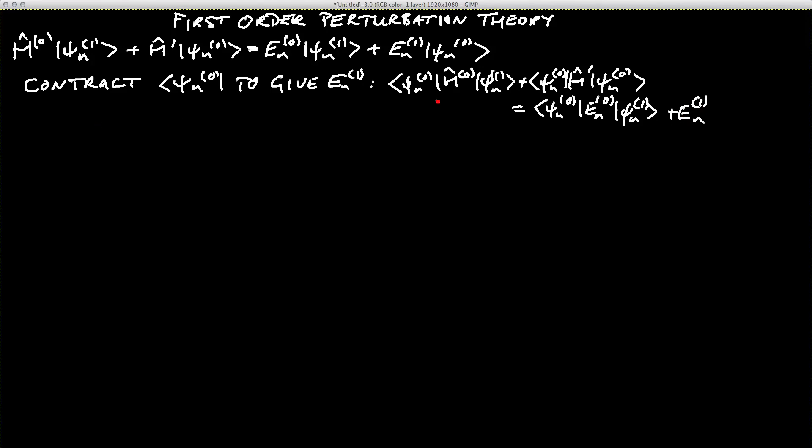The only thing we have to do at this point is to look at this first term. What we can do is notice that psi n of 0, h hat of 0, psi n of 1 is equal to psi n of 1, h hat of 0, psi n of 0 star. We can write that because h 0 is hermitian. And that's equal to psi n of 1, En of 0, psi n of 0 star, because we've just acted with h 0 on psi 0.